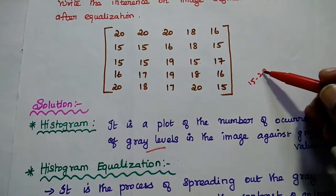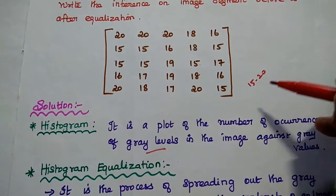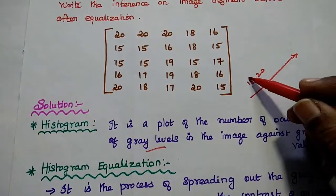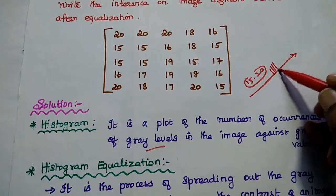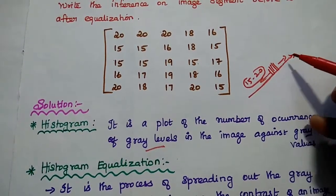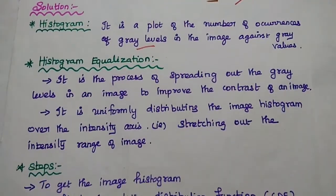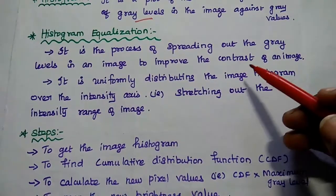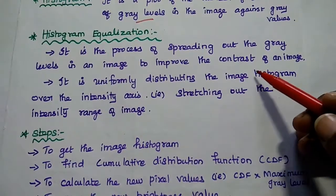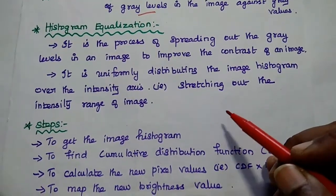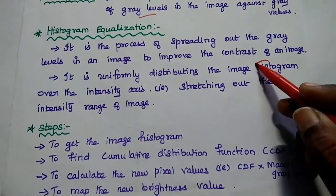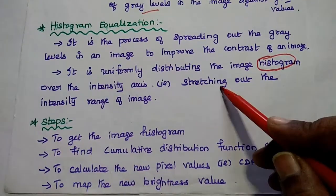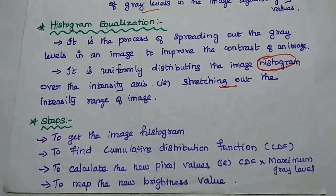So around gray levels 15 to 20, we have around 6 gray levels, but we are going to spread out these gray levels throughout the region — across the entire image. That is called histogram equalization. It is the process of spreading out the gray levels in an image to improve contrast, uniformly distributing the image histogram over the intensity axis, stretching out the intensity range.